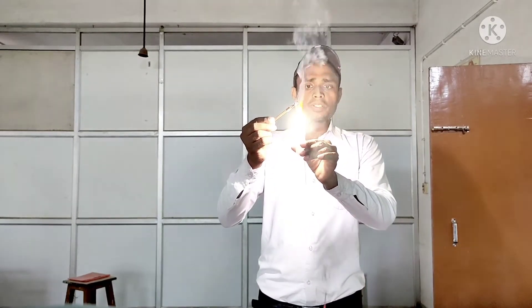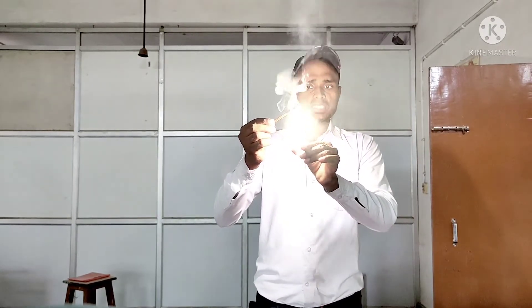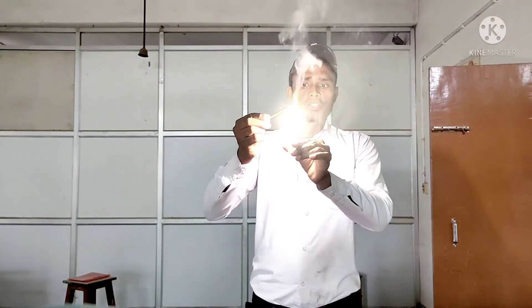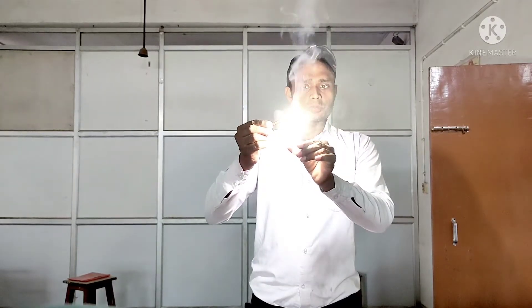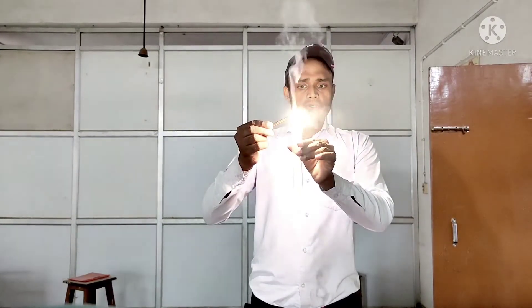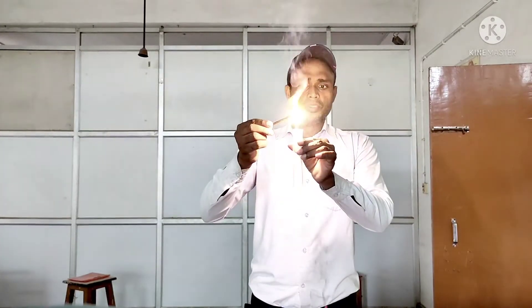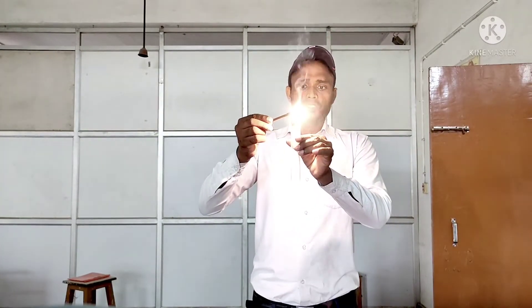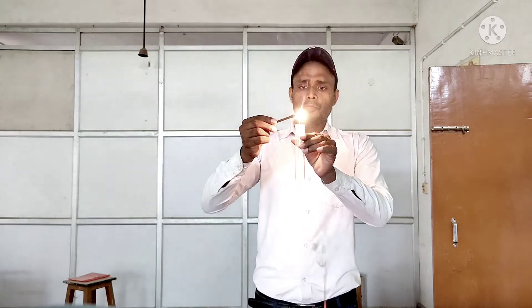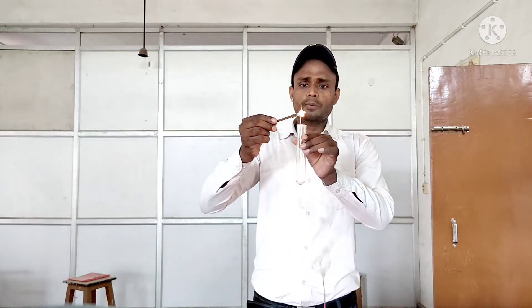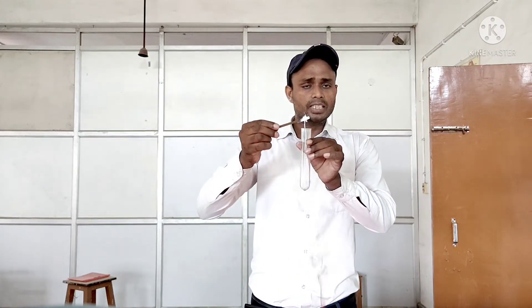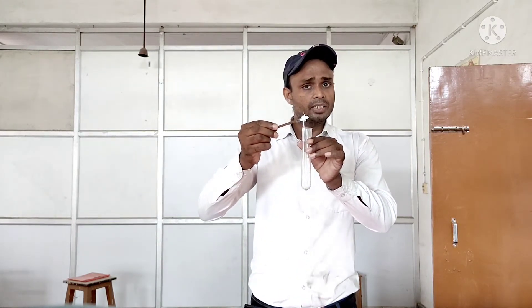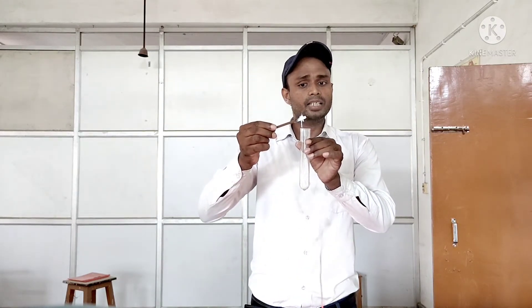The magnesium ribbon burns completely. So what do we get? We get ash. As was explained in the previous video, what is present in this ash? Magnesium oxide.